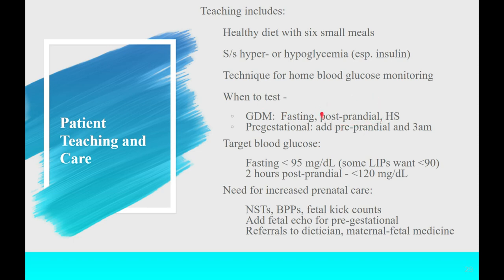Postprandial — after meals — testing is usually done at two hours after meals; sometimes a bedtime number is added. For pre-gestational diabetics, testing is more frequent: fasting, pre-prandial before each meal, postprandial after each meal, bedtime, and possibly 3 a.m. — especially for brittle diabetics who go low overnight after taking NPH, Levemir, or Lantus.